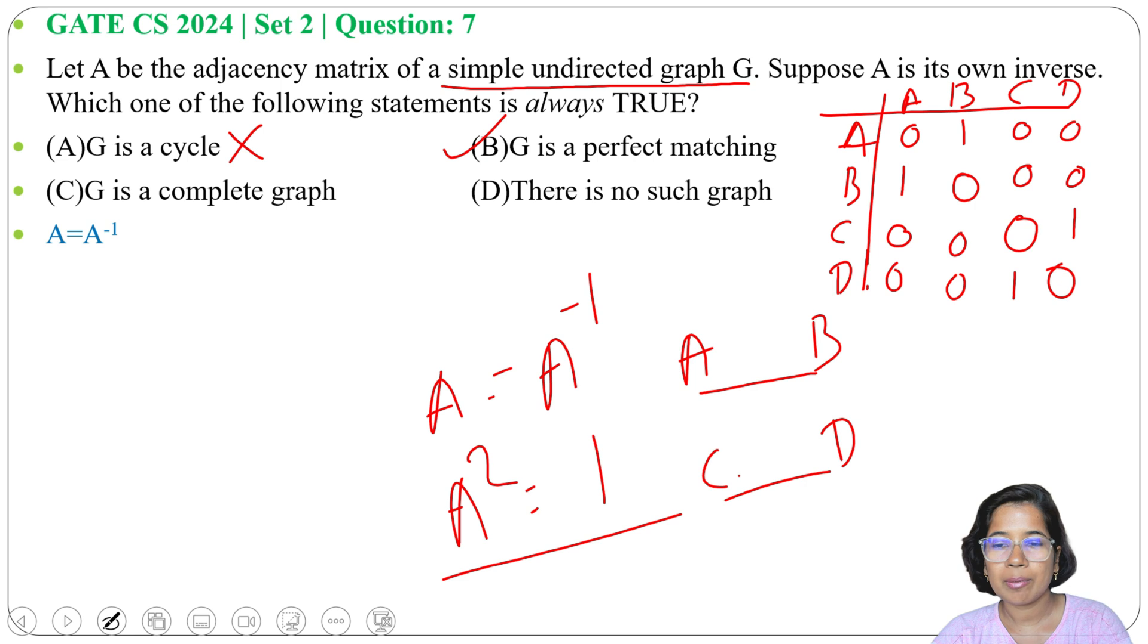Now option C: G is a complete graph. No, this is not a complete graph. In four vertices complete graph there will be six edges. In case of complete graph, A will not equal to its inverse. All vertices are adjacent with all other vertices. Here in one row or one column there can be only one one. In case of complete graph, except the diagonal all will be one. So option C is wrong.